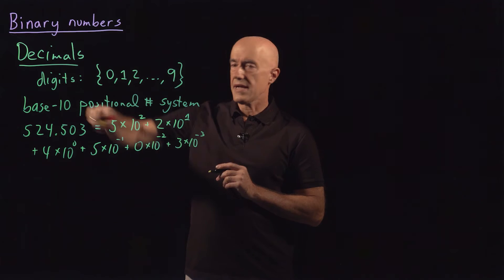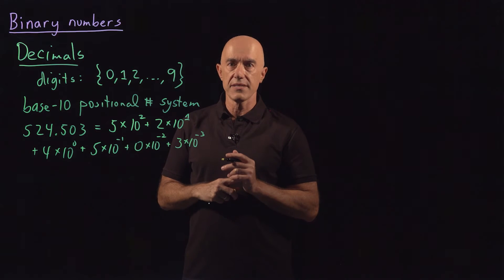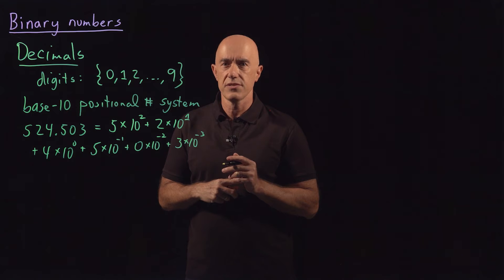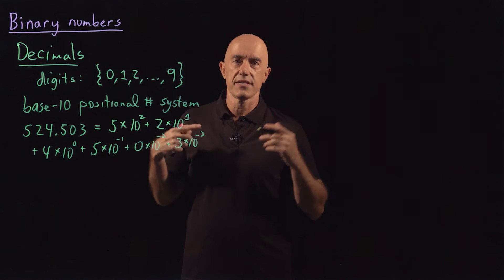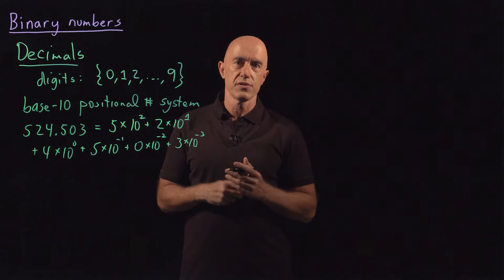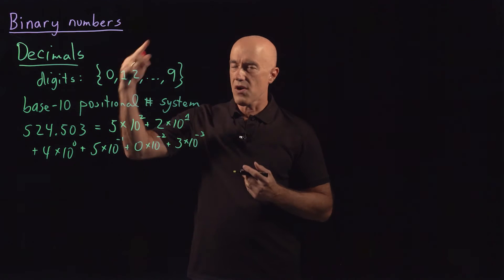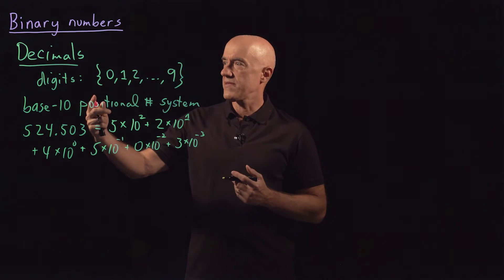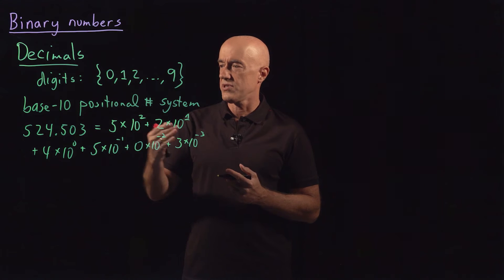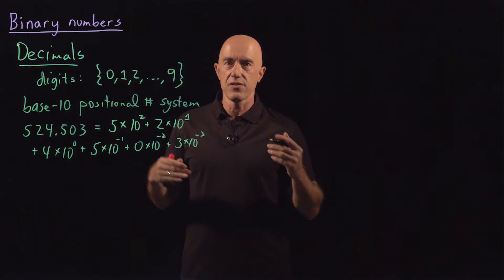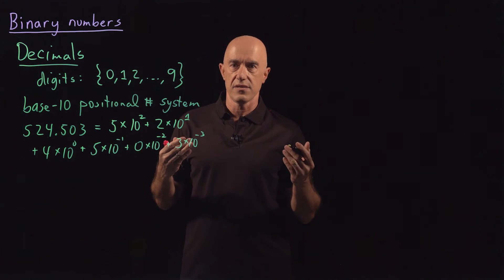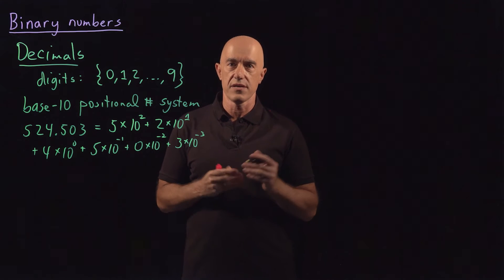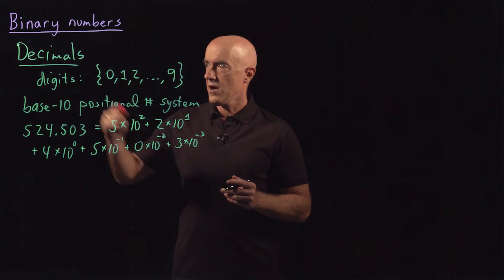That's the meaning of a base 10 number — one of the greatest inventions ever, because before that you might know Roman numerals. It's very difficult to do arithmetic with Roman numbers. But the base 10 positional number system allowed easy addition, multiplication, division — everything you learn in grade school.